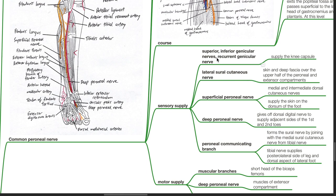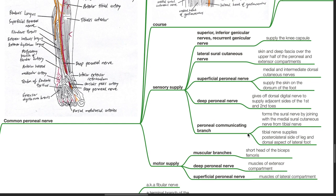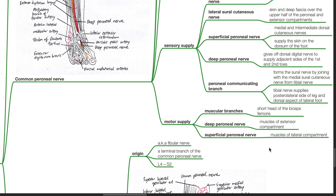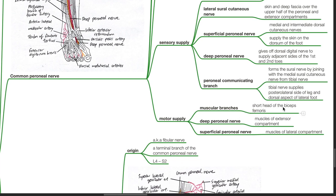Sensory supply: Superior and inferior genicular nerves and recurrent genicular nerves supply the knee capsule. Lateral sural cutaneous nerve supplies the skin and deep fascia over the upper half of the peroneal and extensor compartments. Superficial peroneal nerve supplies the skin on the dorsum of the foot. Deep peroneal nerve gives off dorsal digital nerves to supply adjacent sides of the first and second toes. Peroneal communicating branch forms the sural nerve by joining with the medial sural cutaneous nerve from the tibial nerve. The sural nerve supplies the posterior lateral side of the leg and dorsal aspect of the lateral foot. Motor supply: muscular branches supply the short head of the biceps femoris. Deep peroneal nerve supplies muscles of the extensor compartment. Superficial peroneal nerve supplies muscles of the lateral compartment of the leg.